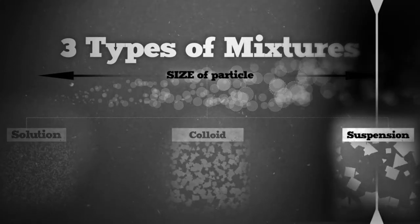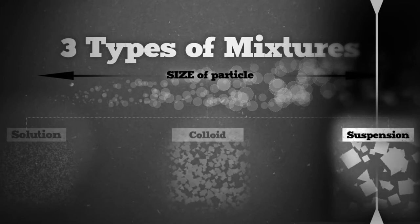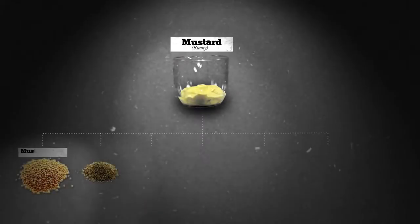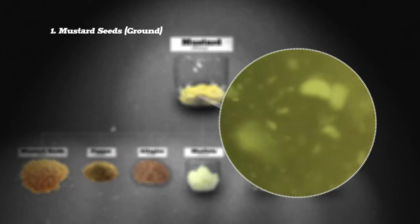On one end of the scale is a suspension, like our muddy water example. You get this if you take big chunks of something and mix it with something else so those chunks are just floating around. Take runny mustard, for example. You'll see a bunch of little particles like mustard seeds,